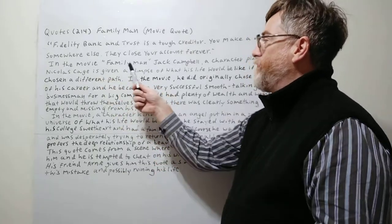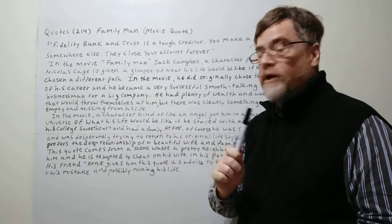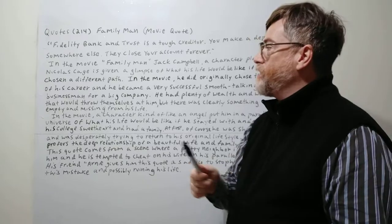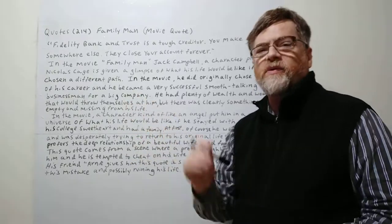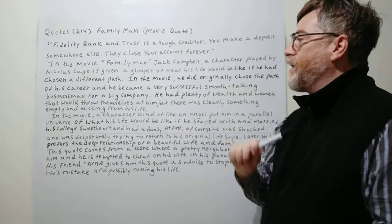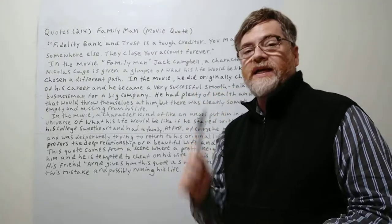Somewhere in the movie Family Man, Jack Campbell, a character played by Nicolas Cage, is given a glimpse, a short look, of what his life would be like if he had chosen a different path.